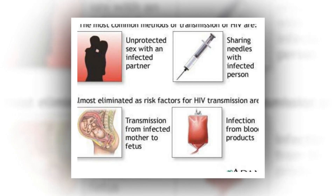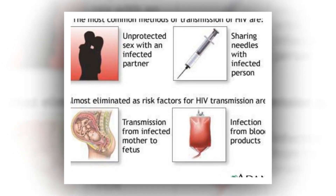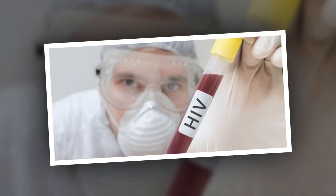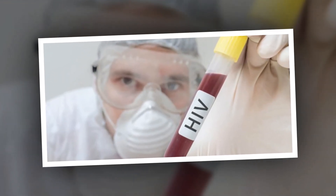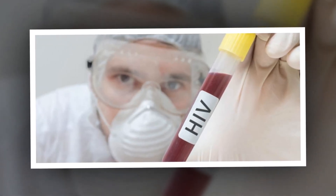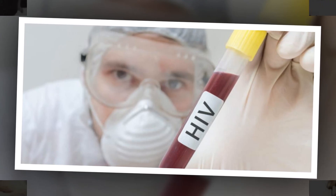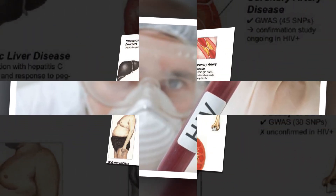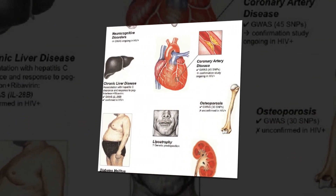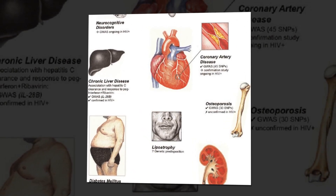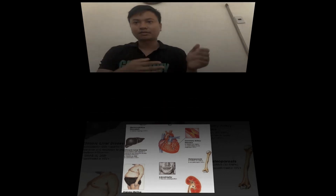Non-Hodgkin's lymphoma — this cancer affects your body's lymphatic system. Three subtypes are common in people with advanced HIV and AIDS: aggressive B-cell lymphomas, primary central nervous system lymphoma, and primary effusion lymphoma. Cervical cancer — women infected with HIV have a higher risk of cervical cancer, which affects the cervix connecting the uterus and vagina.